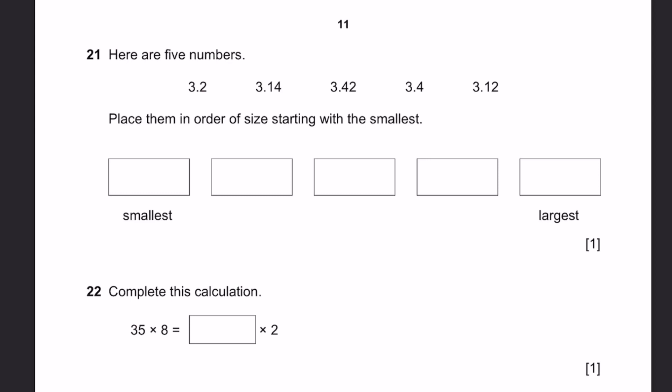Question 21. Here are five numbers: 3.2, 3.14, 3.42, 3.4, 3.12. Place them in order of size, starting with the smallest. The smallest is 3.12, then comes 3.14, then 3.2, 3.4, and then 3.42 is the largest.